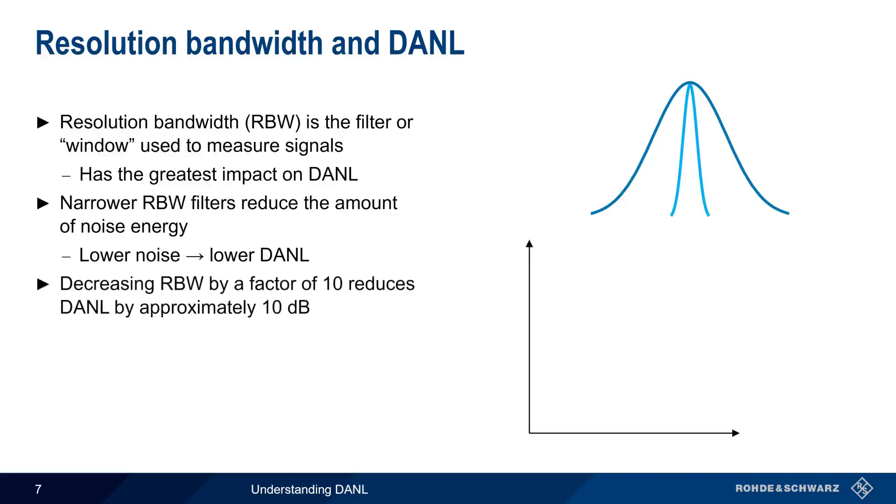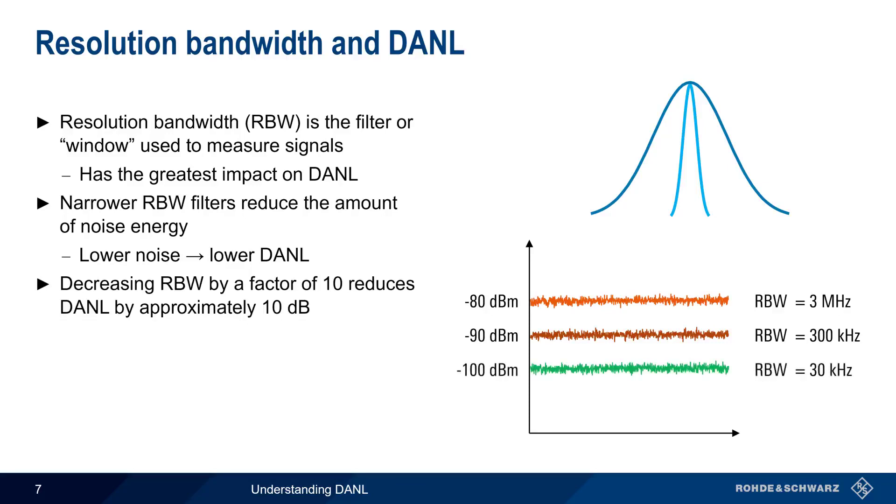Decreasing resolution bandwidth by a factor of 10 reduces DANL by approximately 10 dB. For example, if DANL is minus 80 dBm when resolution bandwidth is 3 MHz, DANL will decrease to approximately minus 90 dBm when resolution bandwidth is reduced to 300 kHz. Reducing resolution bandwidth to 30 kHz reduces DANL another 10 dB to minus 100 dBm, and an RBW of 3 kHz would cause DANL to drop one more time to about minus 110 dBm.